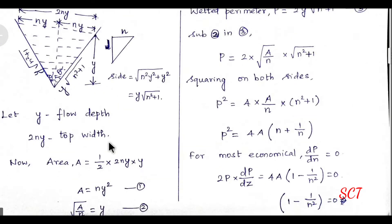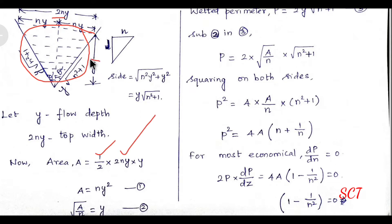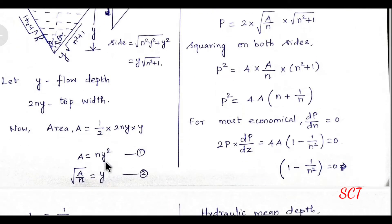The area is calculated as half times base times height for a triangle. The base is 2ny and the height is y, so area A = ½ × 2ny × y. The 2s cancel, giving A = ny². Rearranging, we get y² = A/n, and taking the square root: y = √(A/n).